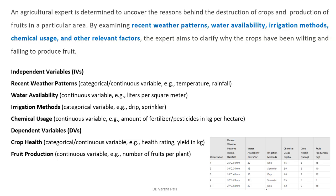Now we will see another example. An agricultural expert is determined to uncover the reasons behind the destruction of crops and the production of fruits in a particular area. By examining recent water patterns, water availability, irrigation methods, chemical usage, and other relevant factors, the expert aims to clarify why the crops have been wilting. The independent variables are recent weather patterns, water availability, irrigation methods, and chemical usage. The dependent variables are crop health and fruit production. This is the sample dataset for this problem.